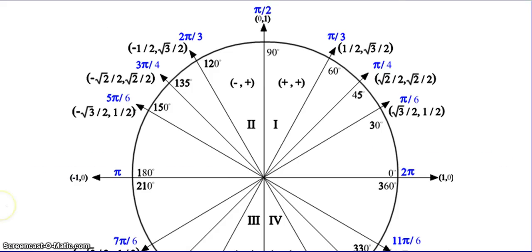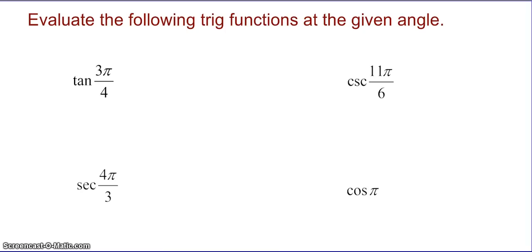For example, looking at the unit circle, at an angle of pi over 6 or 30 degrees, the sine of pi over 6 is 1/2 and the cosine of pi over 6 is root 3 over 2. Going around the unit circle, it's really easy to figure out sine and cosine values. Now I want you to evaluate the following trig functions at the given angles — pause the video and come back when you think you have your answers.